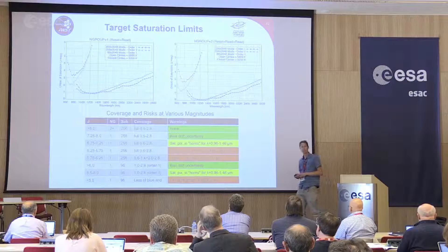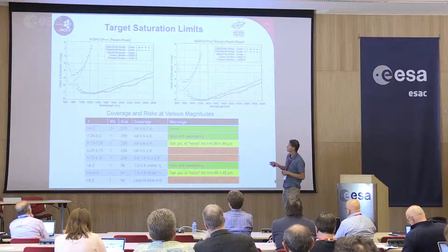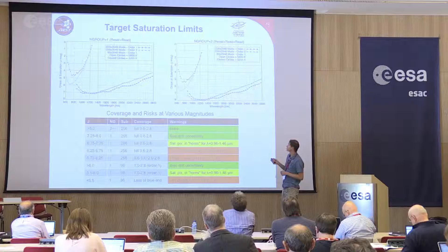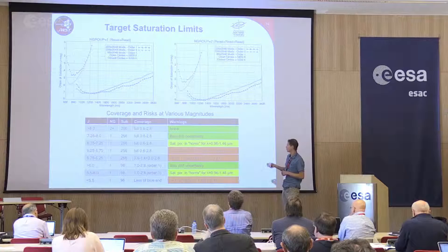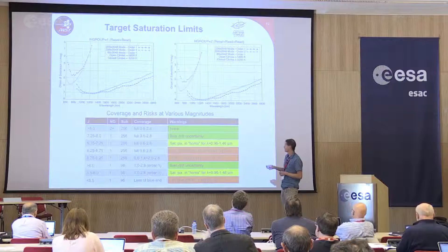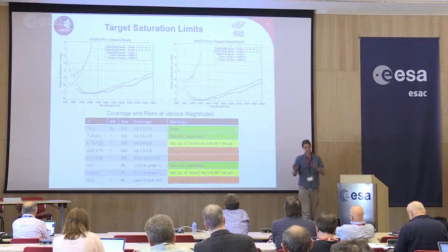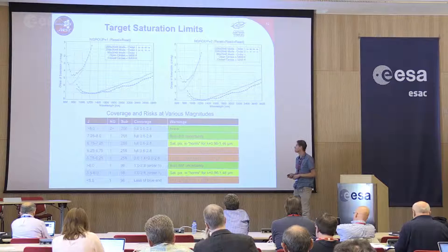This is a detailed plot showing saturation limits — I won't go through all the details, but it shows different exposure parameters using Ngroup of 1 or Ngroup of 2, how the saturation level changes with wavelength for different sub-arrays and different orders, and for different magnitude ranges between 5.5 and 8. It tells you which number of groups you should use, which sub-arrays to use, what kind of wavelength coverage you'll get, and information about which parts of the data you might be losing due to saturation or bias drift uncertainty if using the Ngroup of 1 option.